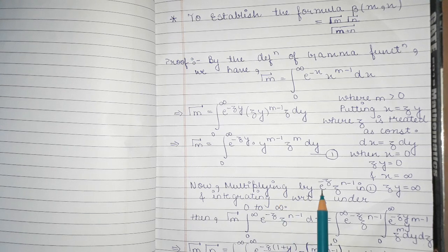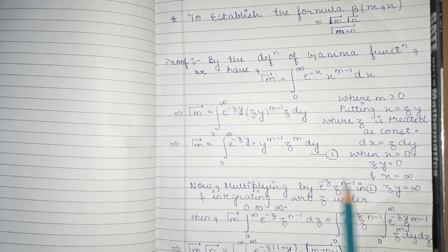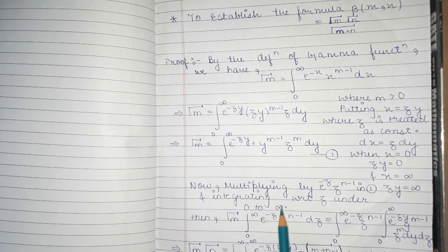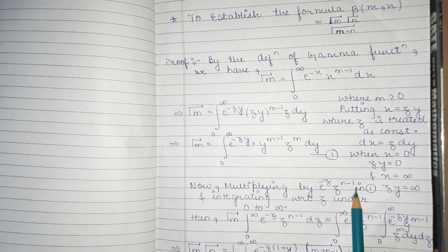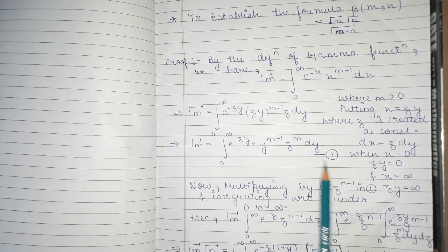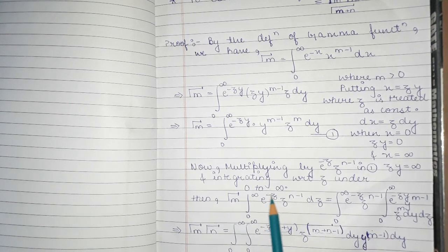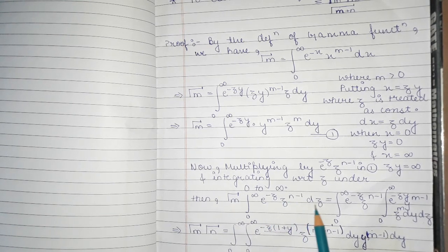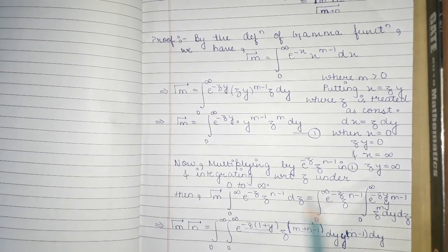Now we multiply both sides of equation 1 by e^(-z) times z^(n-1) and integrate with respect to z from 0 to infinity. So our equation 1 becomes: Gamma(m) times the integral from 0 to infinity of e^(-z) z^(n-1) dz equals the integral from 0 to infinity of e^(-z) z^(n-1) times the original expression.